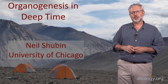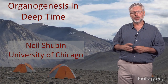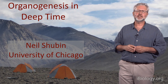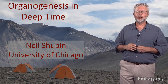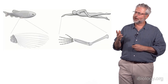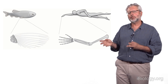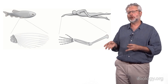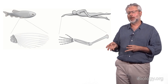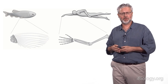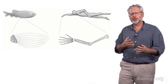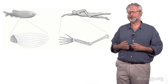My name is Neil Shubin from the University of Chicago, and we're going to talk today about organogenesis in deep time. In particular, we're going to compare a fish to a human. How do you compare a fish fin to a human limb? How did the limb come about from fins? And what are the different ways we pull together different types of data?